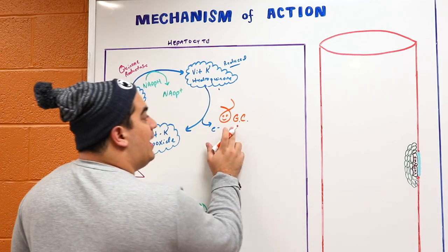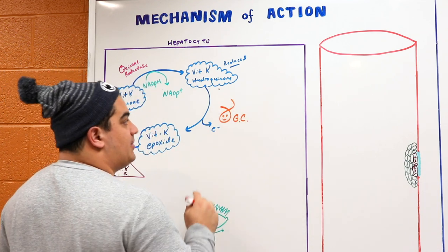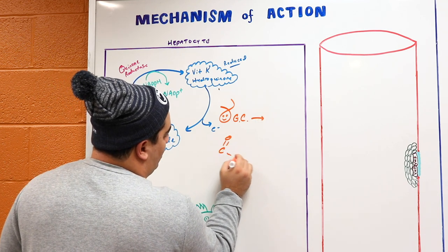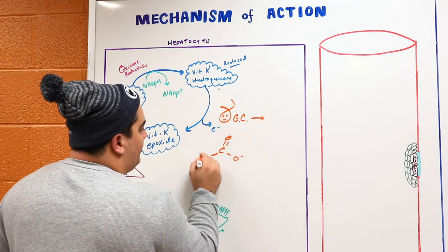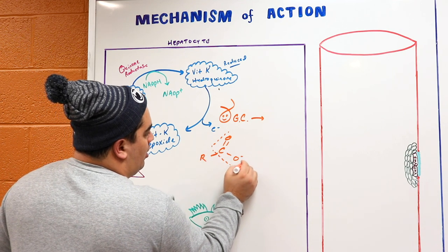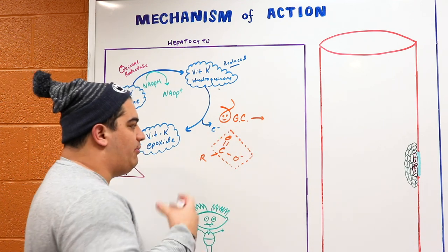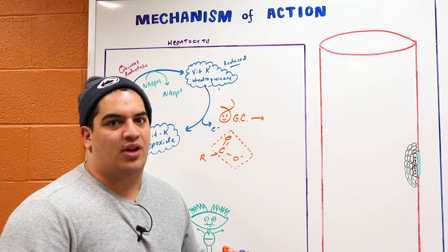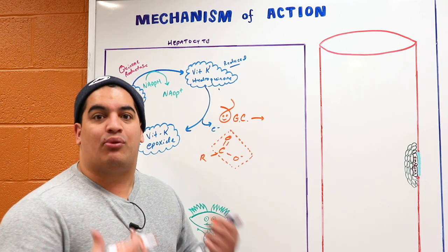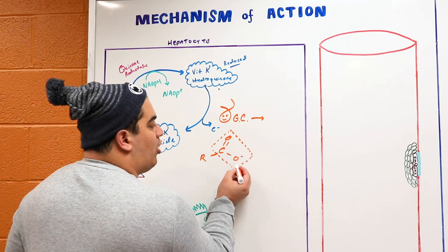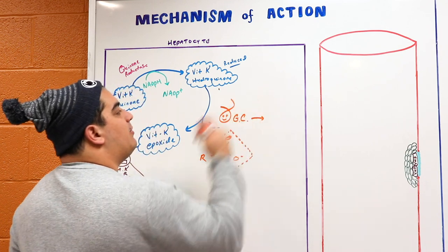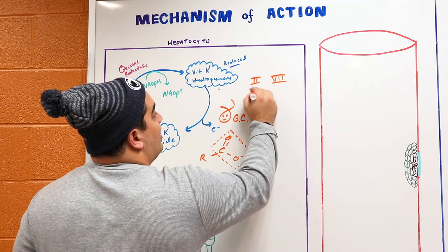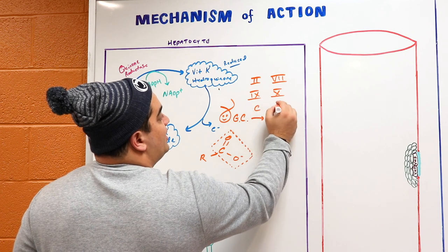Gamma glutamyl carboxylase is going to carboxylate specific clotting proteins — carboxylation means adding on a CO2 molecule onto a specific molecule. These proteins are not in their functional state; they won't work unless we carboxylate them properly. To make them functional, we add a carboxyl group. The clotting proteins that need this are: Factor 2, Factor 7, Factor 9, Factor 10, Protein C, and Protein S.